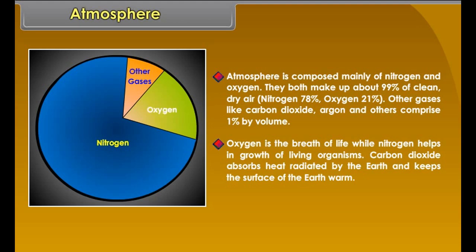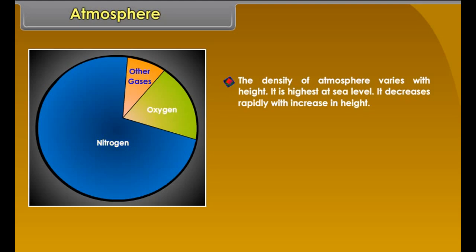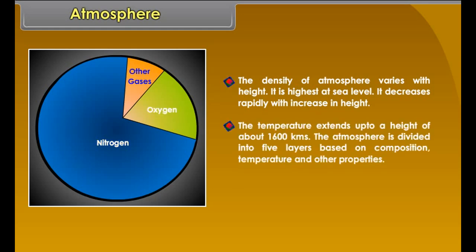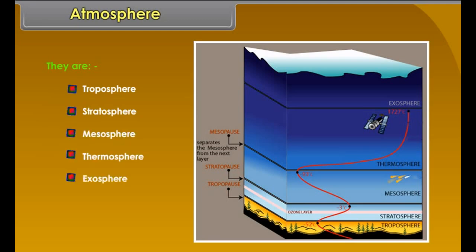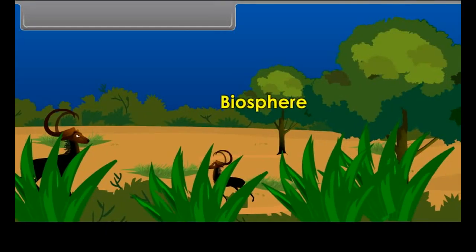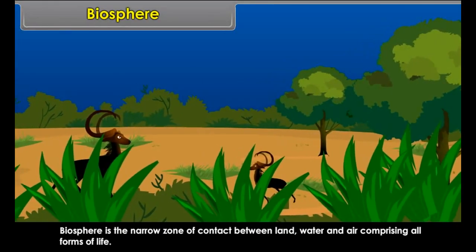Atmosphere is composed mainly of nitrogen and oxygen. They both make up about 99% of clean, dry air — nitrogen 78% and oxygen 21%. Other gases like carbon dioxide, argon and others comprise 1% by volume. Oxygen is the breath of life, while nitrogen helps in the growth of living organisms. Carbon dioxide absorbs heat radiated by the earth and keeps the surface warm. The density of atmosphere varies with height; it is highest at sea level and decreases rapidly with increase in height. The atmosphere extends up to a height of about 1,600 kilometers.